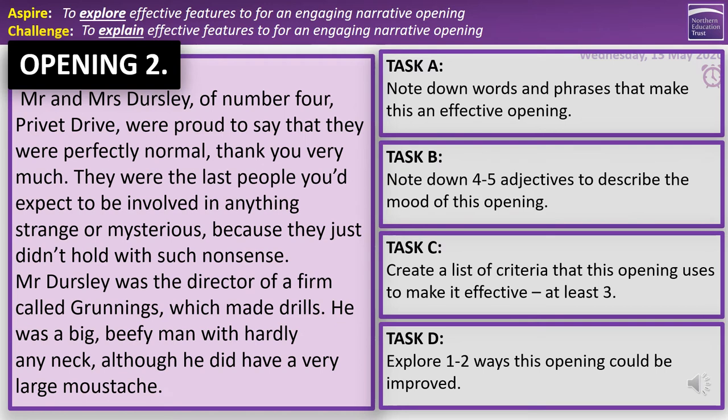Opening two is from Harry Potter, the first book, The Philosopher's Stone — this is how J.K. Rowling chose to open her saga. 'Mr. and Mrs. Dursley of number four Privet Drive were proud to say that they were perfectly normal, thank you very much. They were the last people you'd expect to be involved in anything strange or mysterious, because they just didn't hold with such nonsense. Mr. Dursley was the director of a firm called Grunnings, which made drills. He was a big, beefy man with hardly any neck, although he did have a very large mustache.' Answer those four questions over the next five minutes. Press play when you finish and we'll go over some potential ideas.